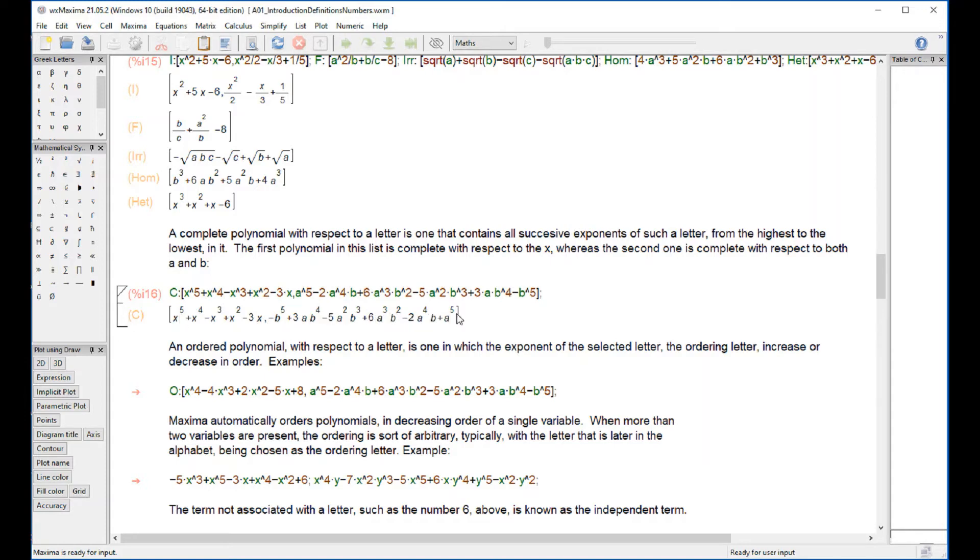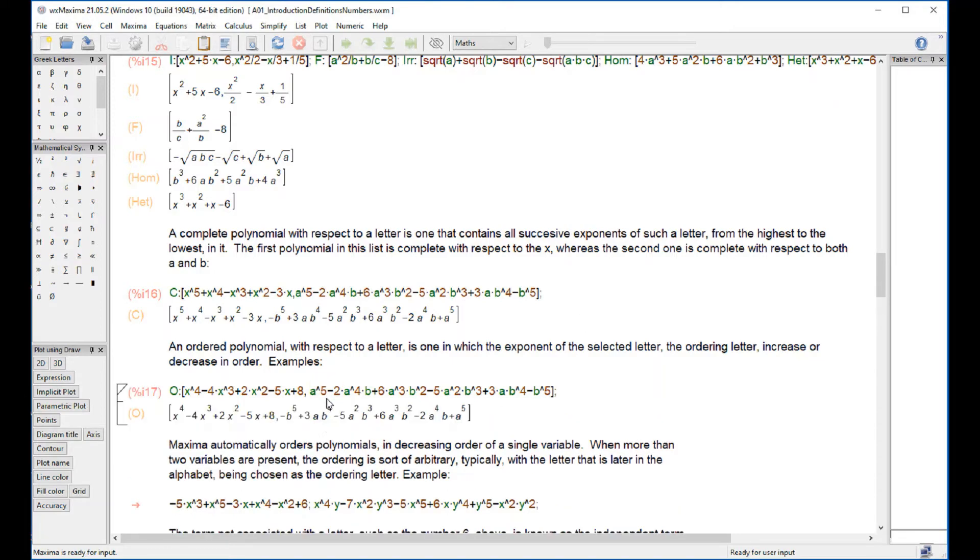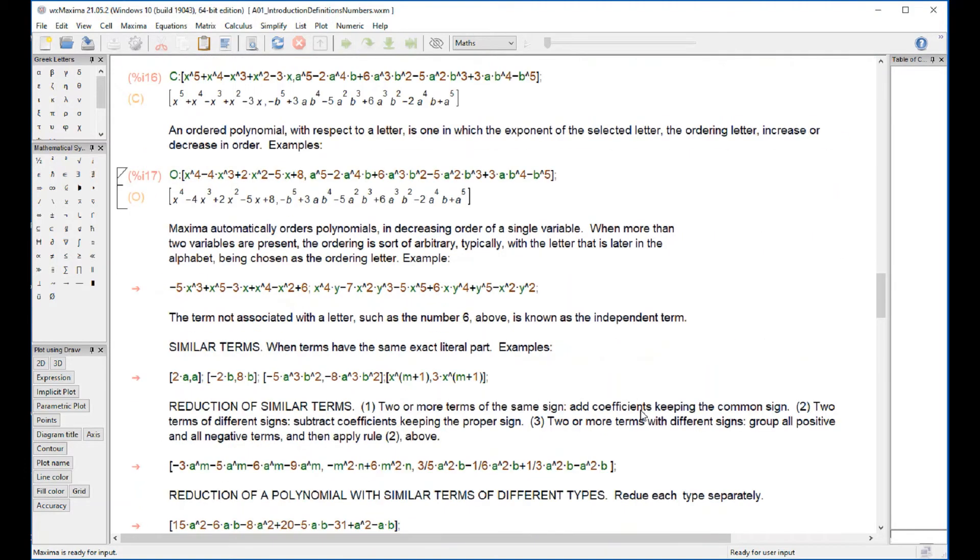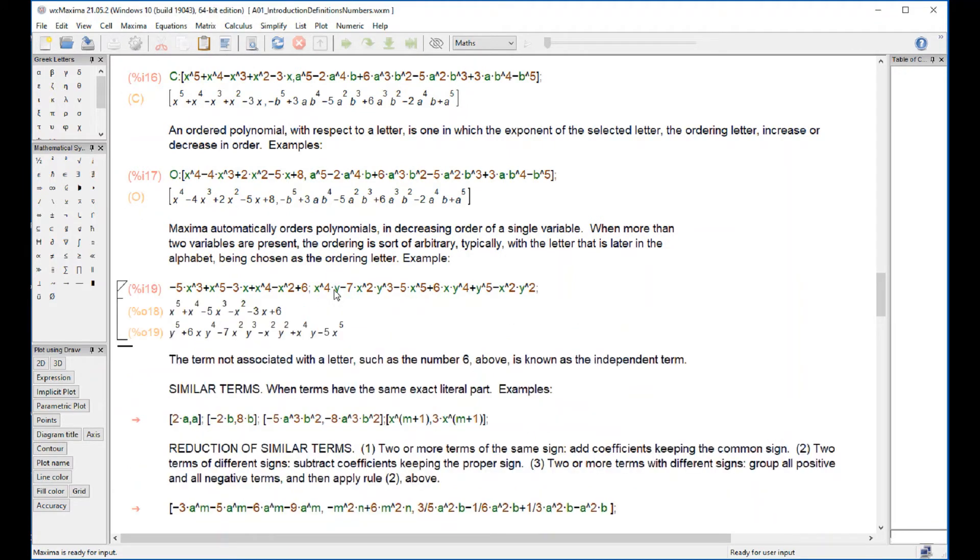Let's check out this example. The first one is only on x so it is ordered from x down. The next one is on x and y, and for some reason Maxima tends to give you the later letter, the y first, and order them with respect to that letter. You just got to be aware of that.